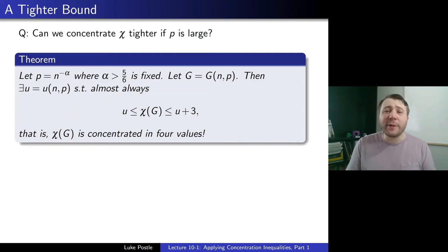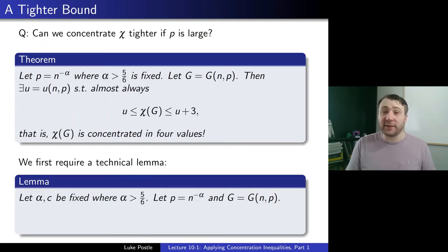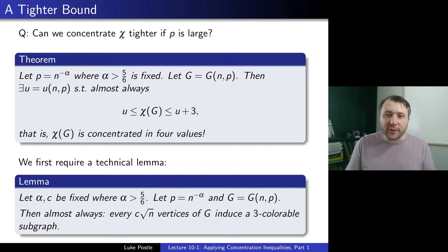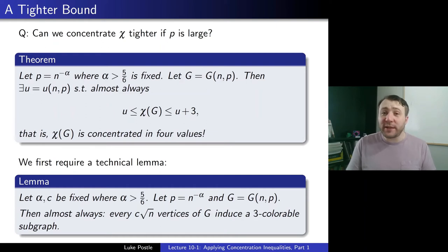How can we possibly show it's within 3? Here's the key technical lemma: let α and c be fixed with α > 5/6, let p = n^{−α}, and G = G(n,p). Then almost always every set of c√n vertices of G induces a 3-colorable subgraph. So if you look at any induced subgraph on that many vertices, it's actually 3-colorable — a strange property, but true with high probability.